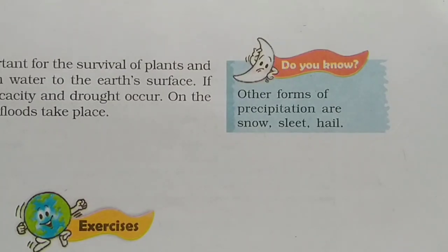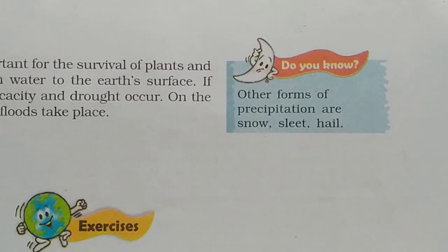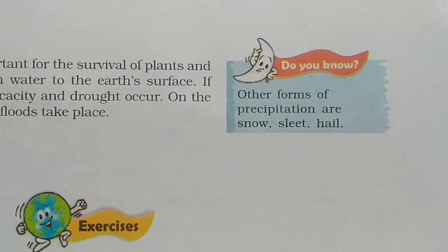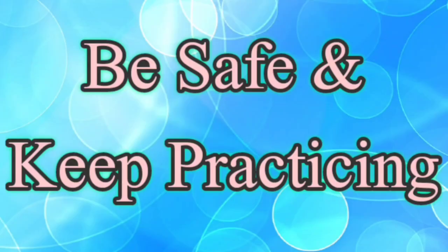Other forms of precipitation include snow, sleet, and hail — when water vapors accumulate in the sky and come back down, they can come in these forms too. With this we complete our explanation of chapter number 4 on air. You have to read it and try to find the answers to the exercise questions.